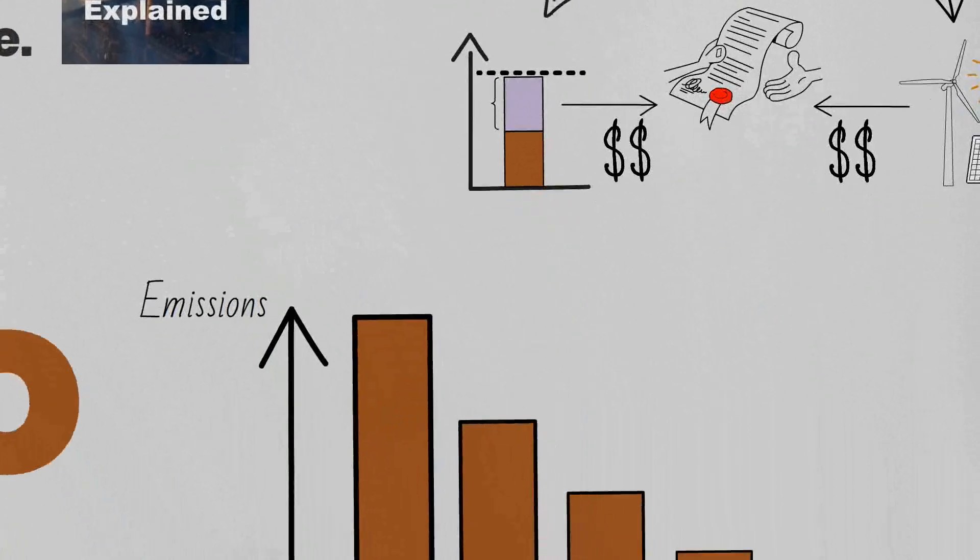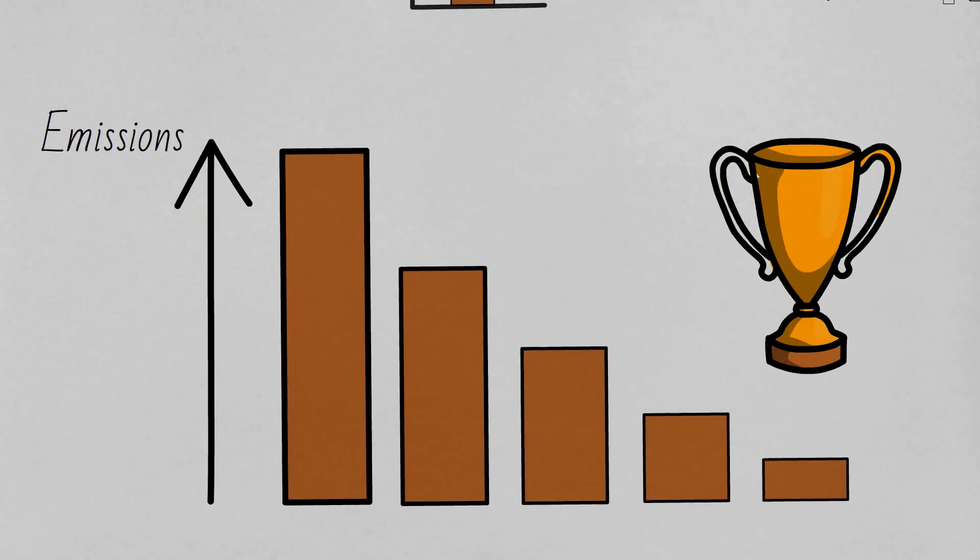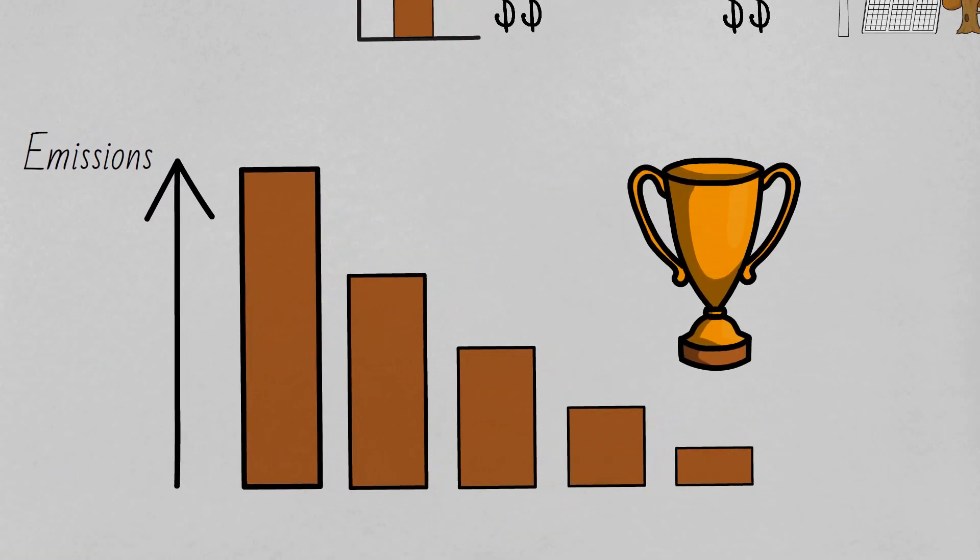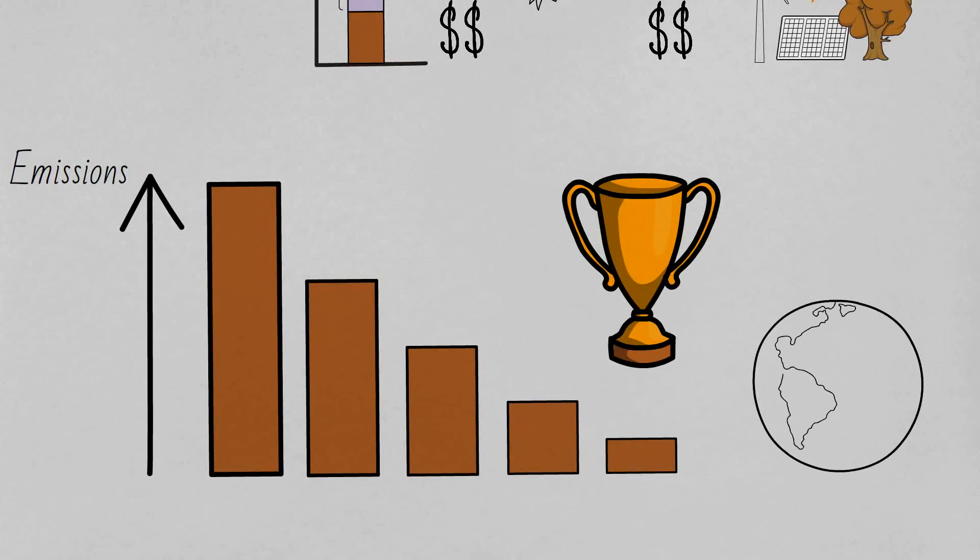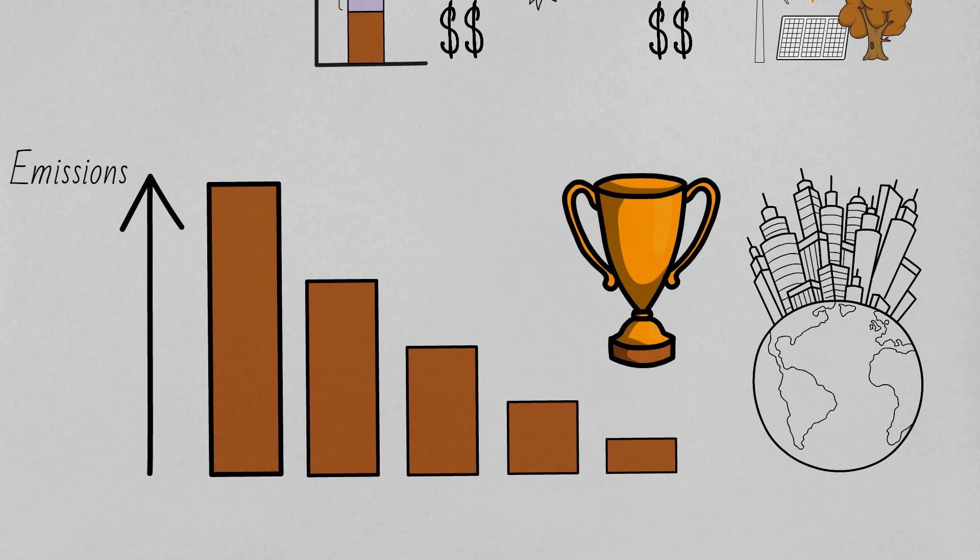So net zero is considered the gold standard for corporate climate action and is widely accepted as being needed across the economy in order to support the target to limit global temperature increases to 1.5 degrees Celsius, as agreed at the 2015 Paris climate summit, also called the Paris Agreement.